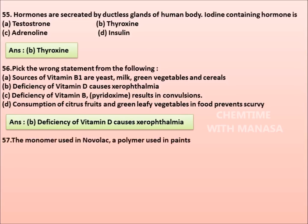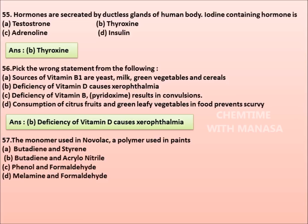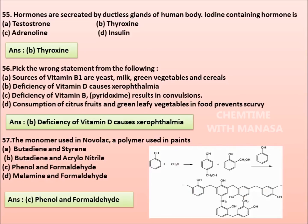57. The monomer used in Novolac, a polymer used in paints: butadiene and styrene, butadiene and acrylonitrile, phenol and formaldehyde, melamine and formaldehyde. Correct answer is option C: Phenol and formaldehyde.